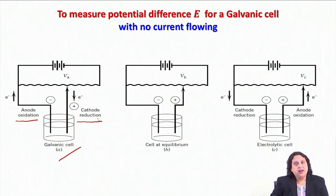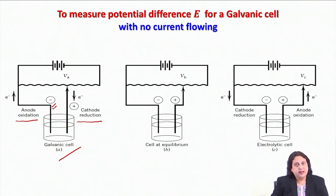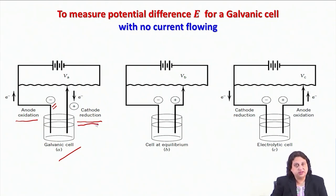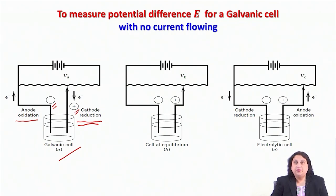During this process, at the anode, the substance undergoing oxidation would leave excess electrons on the electrode, thereby giving it a net negative charge. The substance at the cathode would undergo reduction, taking more and more electrons from the electrode, so the electrode becomes depleted of electrons and therefore has a net positive charge. Because of the spontaneous chemical reaction, the anode and the cathode will now be at different potentials.